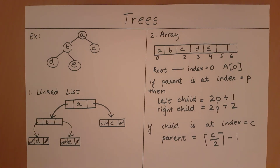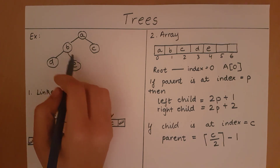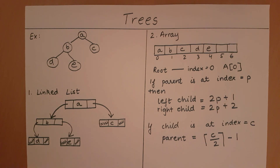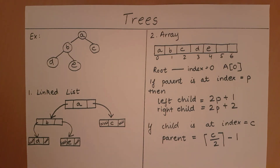It is important to note that these two implementations and the formulas therein only hold if every node in the tree has at most 2 children. I cannot have D, E, and F all as children of B — each node must have at most 2 children, though it can have fewer or just 1. If a node exceeds 2 children, the linked list representation shown here won't apply and the array formulas will not hold. These are the two implementations of trees, provided every node has at most 2 children.